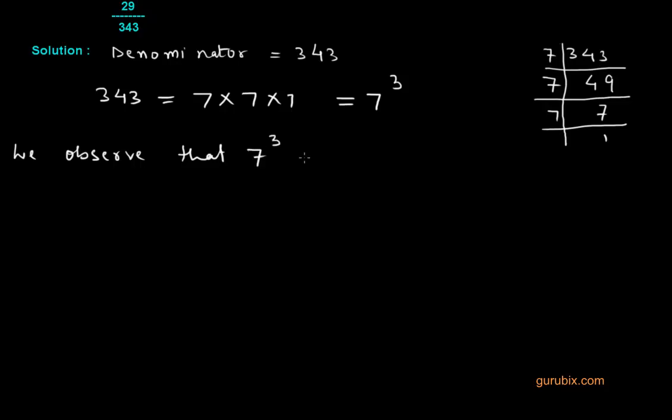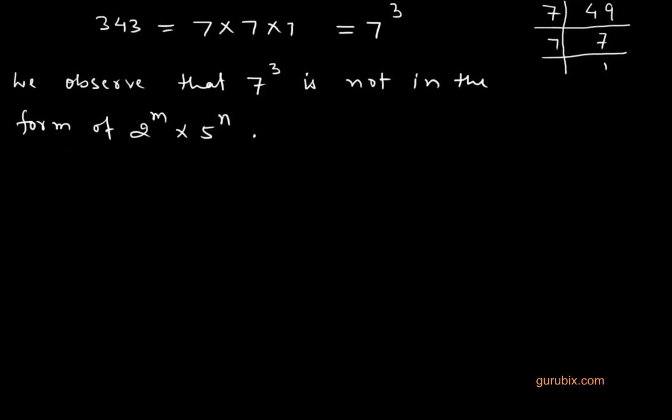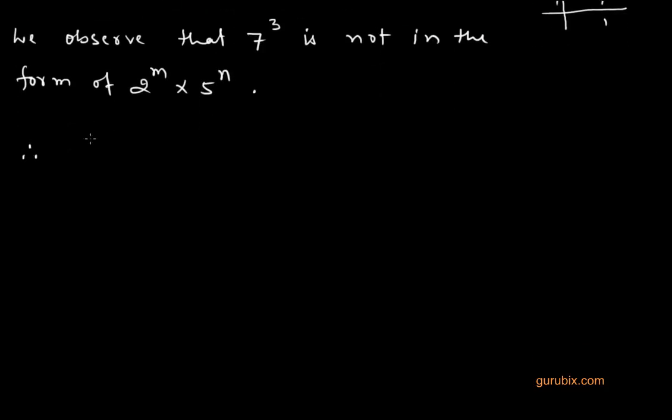We observe that 7 raised to 3 is not in the form of 2 to the power m multiplied by 5 to the power n. Therefore, 29 over 343 has a non-terminating repeating decimal expansion.